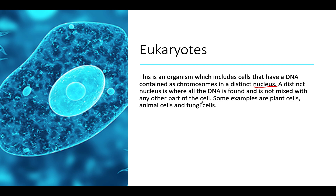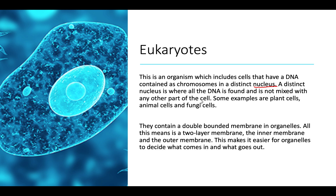Eukaryotes contain a double-bounded membrane in their organelles. A double-bounded membrane is simply a two-layer membrane — it has an inner membrane and an outer membrane. The main job of this membrane is to control what comes in and what goes out of the cell.